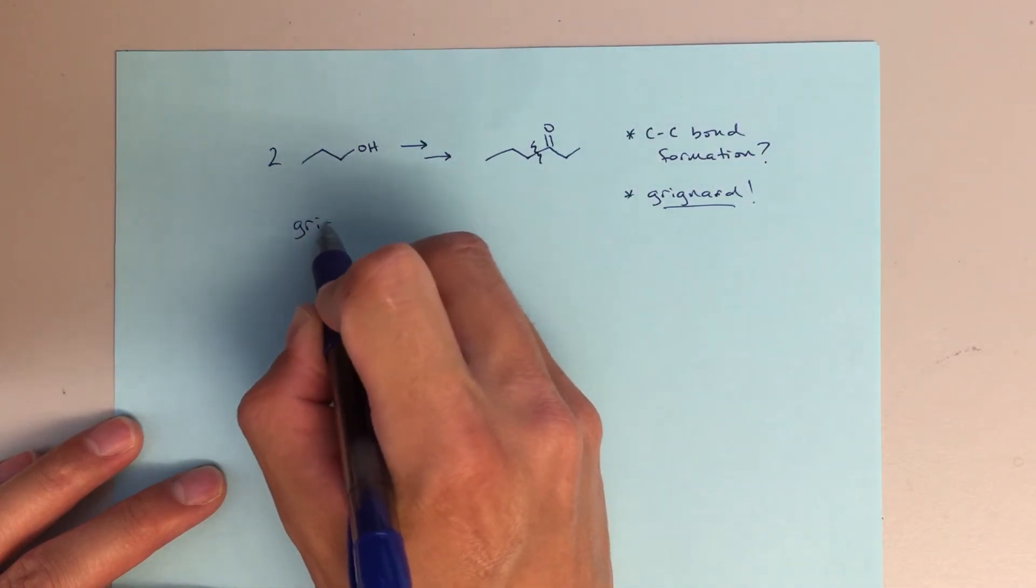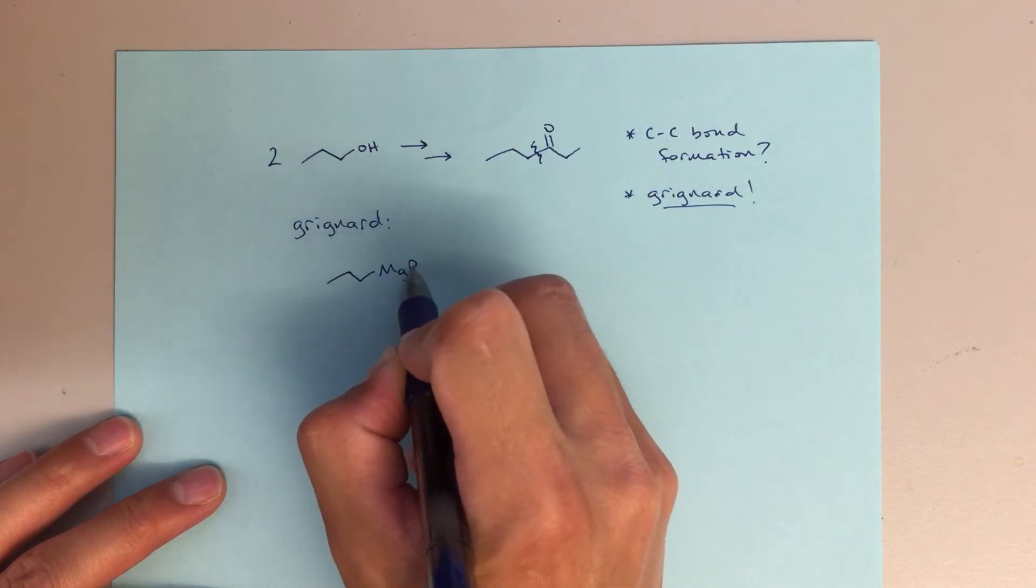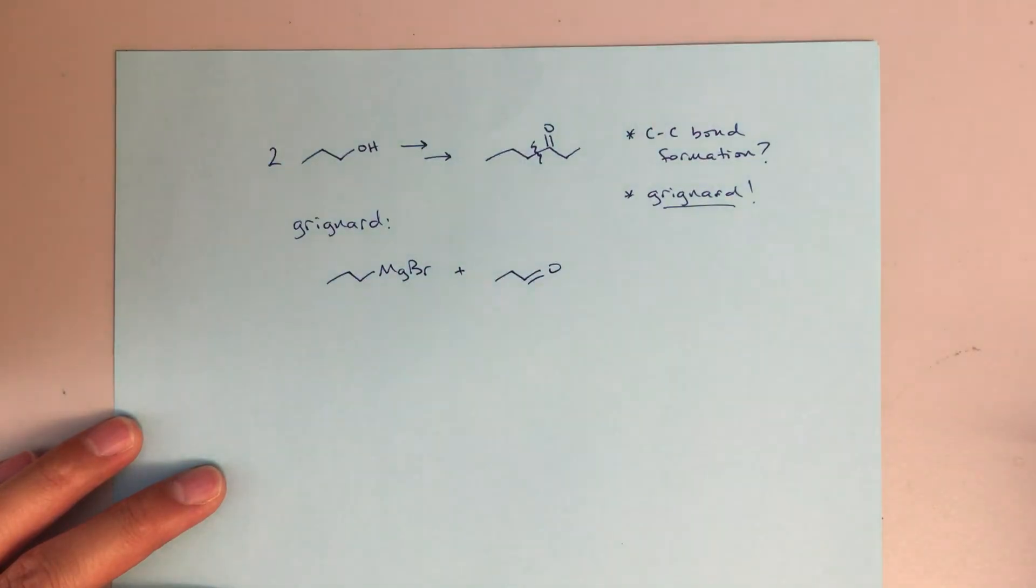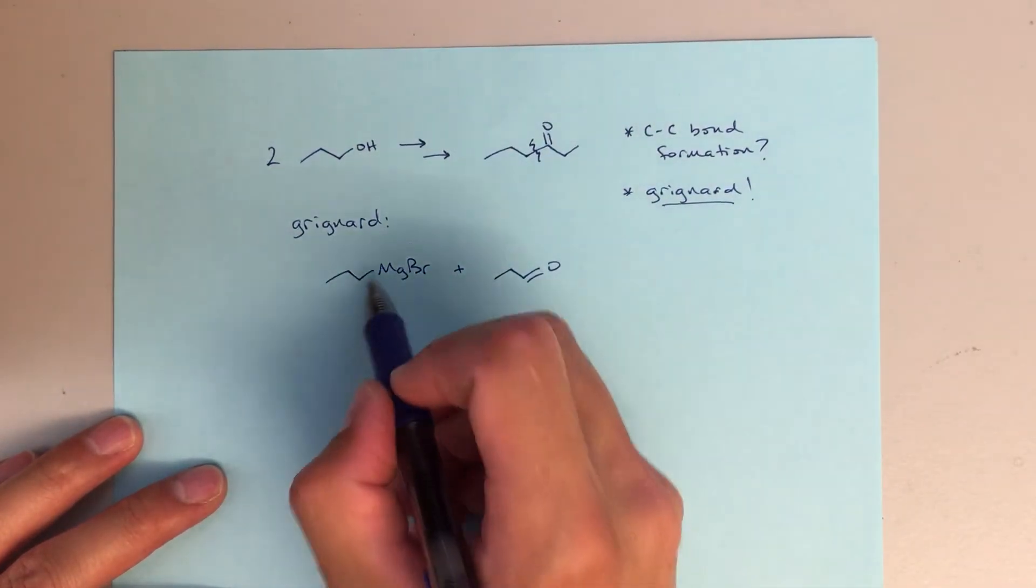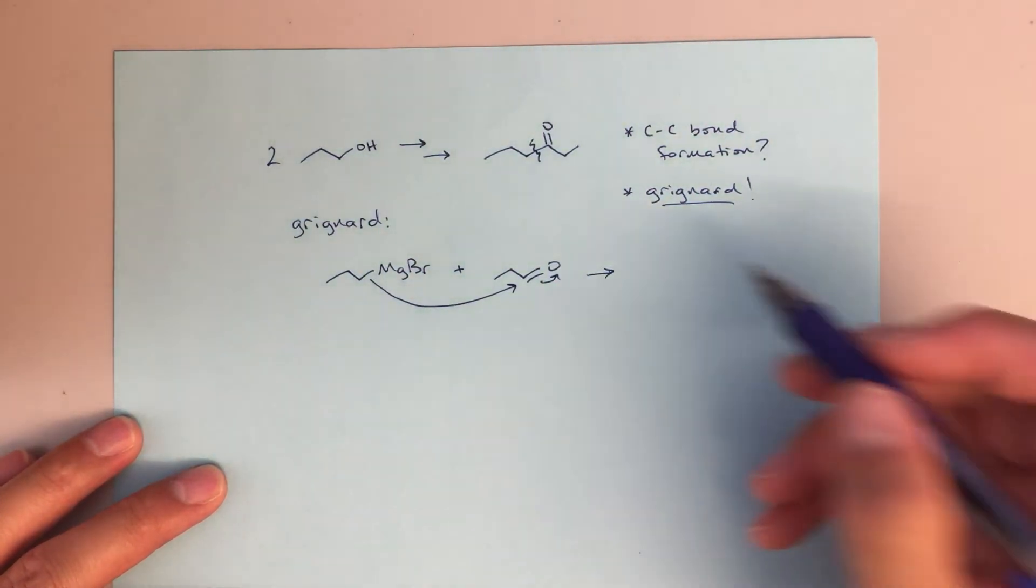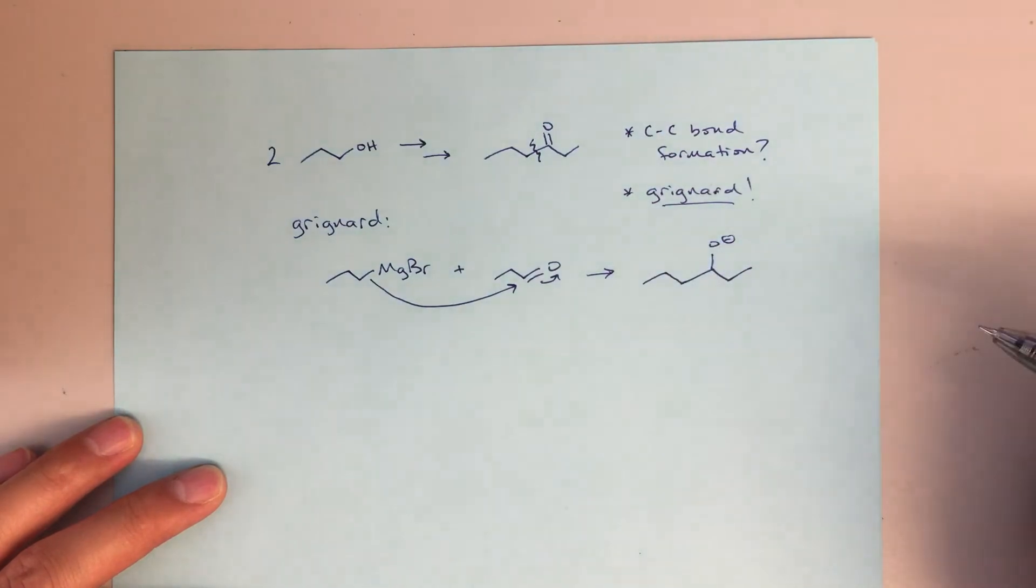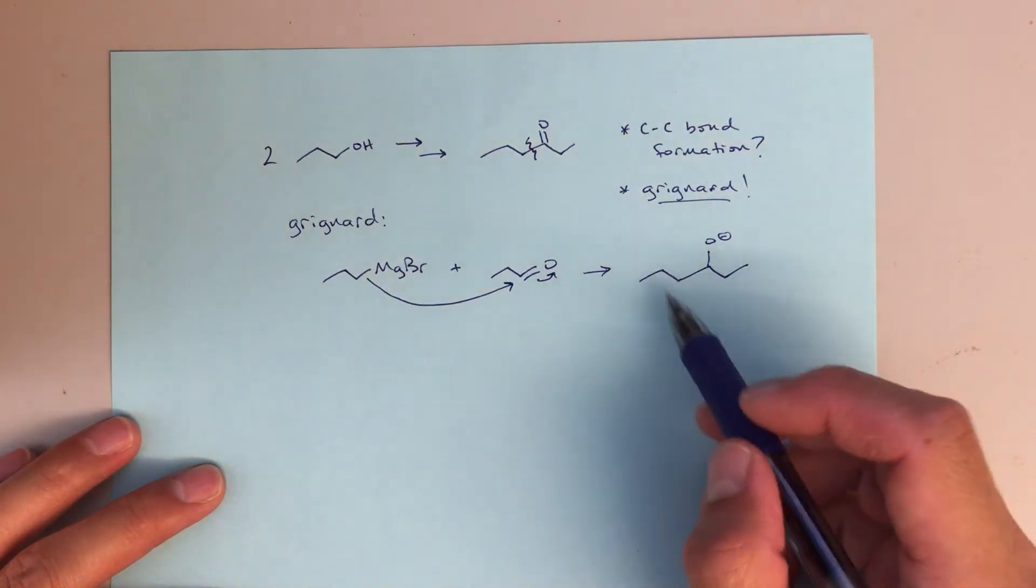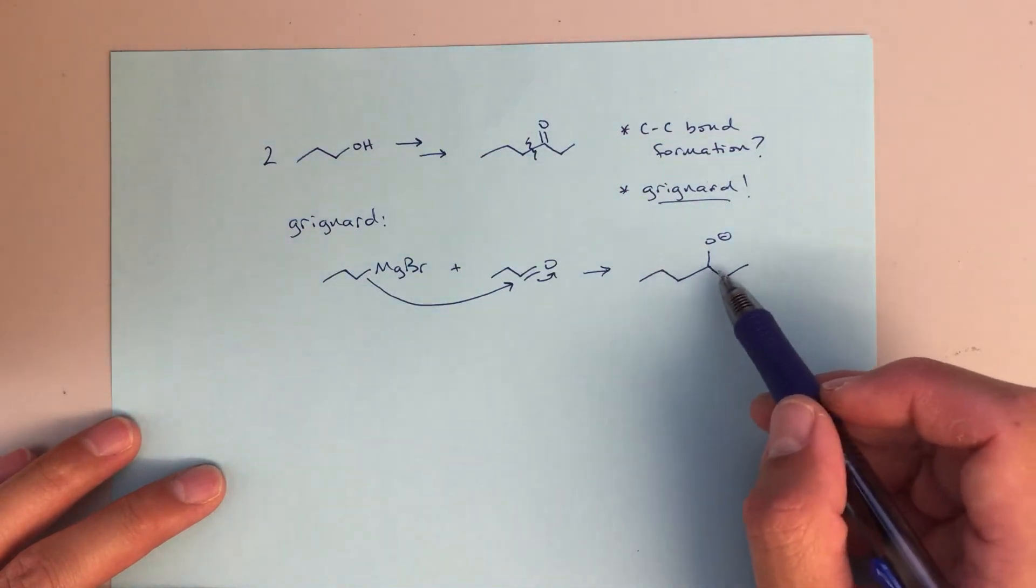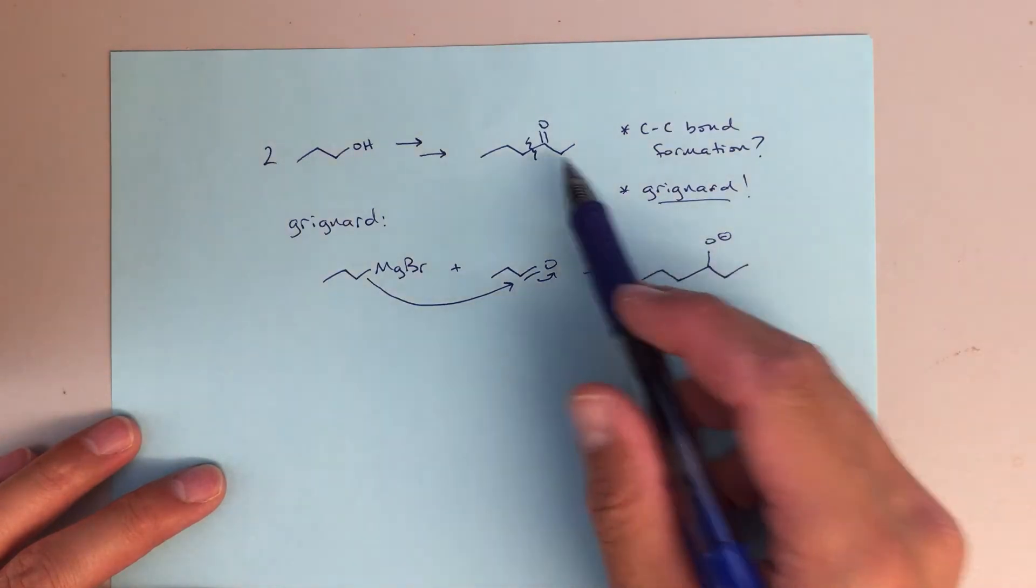So if I think about the Grignard, the two pieces that I would want would be magnesium bromide plus this aldehyde. So if I put those two things together, I'm going to get a reaction that looks like that. And then I'll get this alkoxide, six-membered chain with an O- up there. So this is very close to my final product.